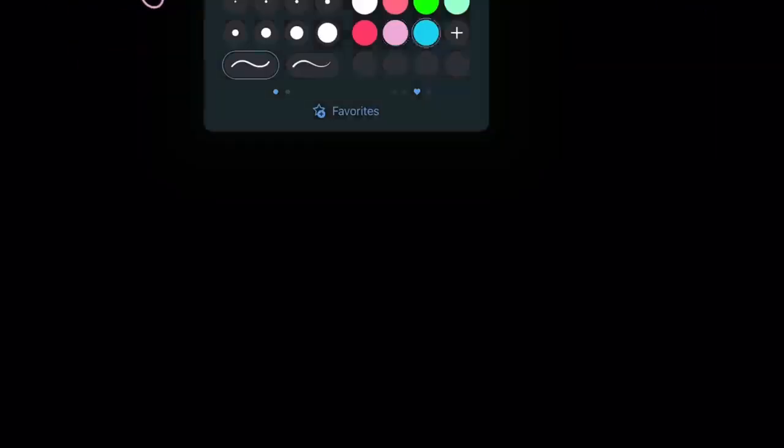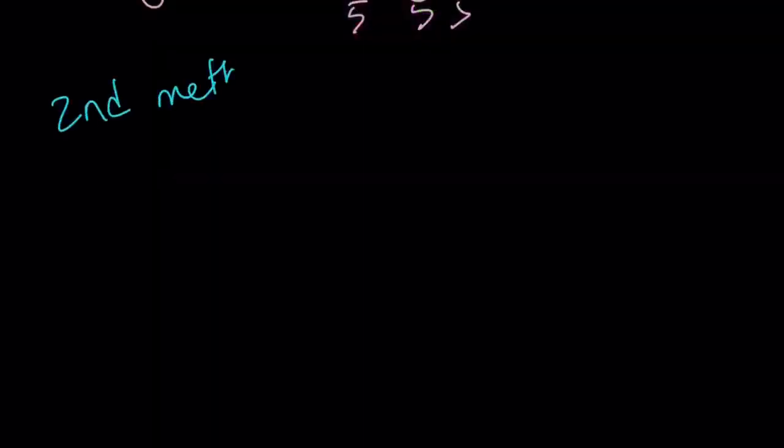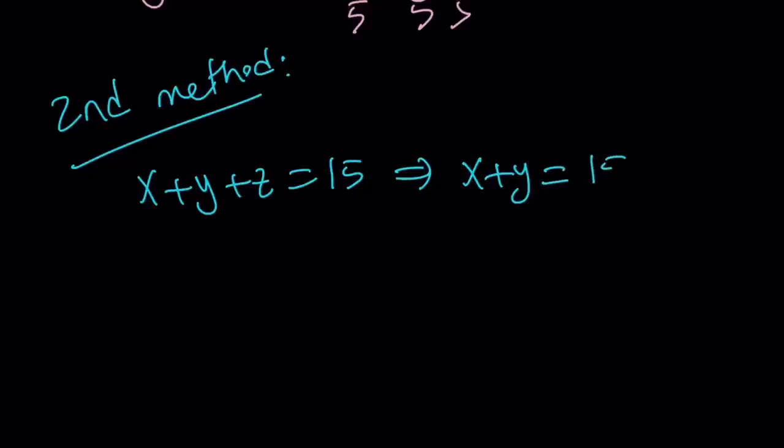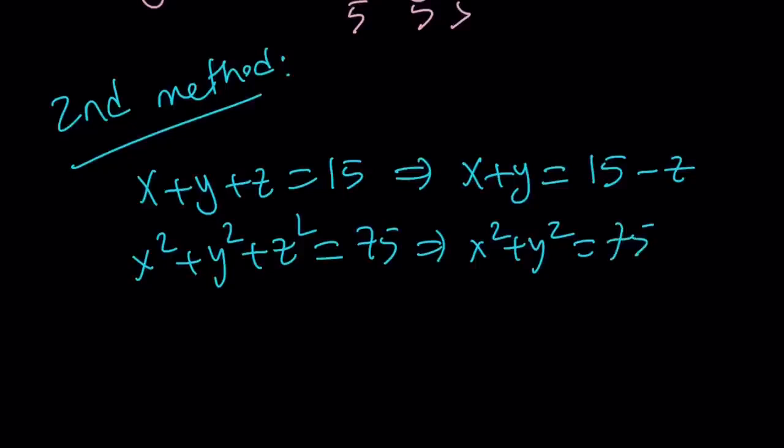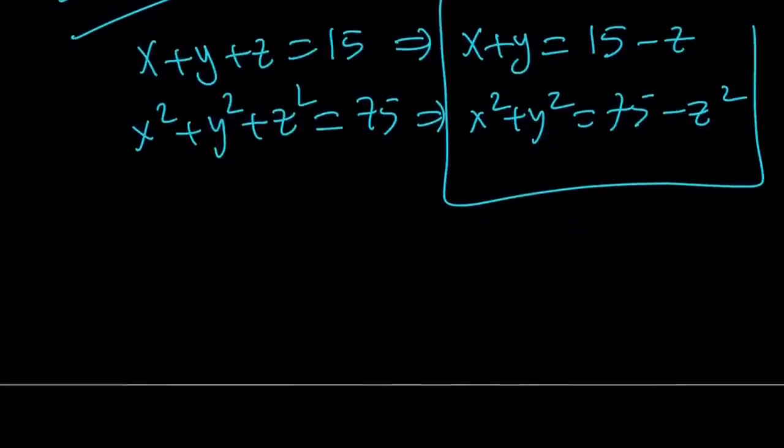The second method is kind of different. And for the second method, I'm going to show you a graph. But before that, let's go ahead and manipulate this. Okay? We have x plus y plus z is equal to 15. From here, I would like to isolate z, or x plus y, rather. I can write x plus y as 15 minus z. And I know that their sum, the squares of their sum, is 75. So from here, I can isolate x squared plus y squared and write it as 75 minus z squared. Great. What does that give you? A system of equations in two variables. Forget about the z. Z is a parameter. We're just going to play with it.